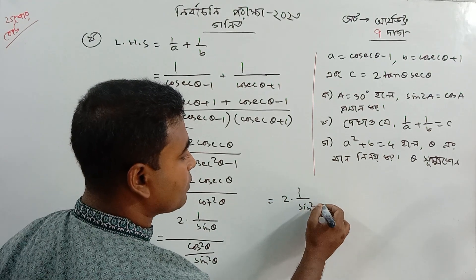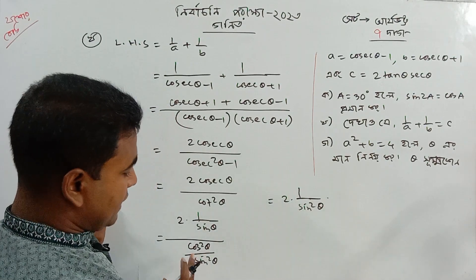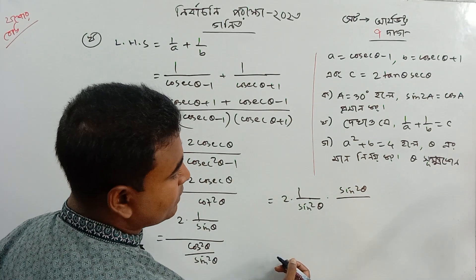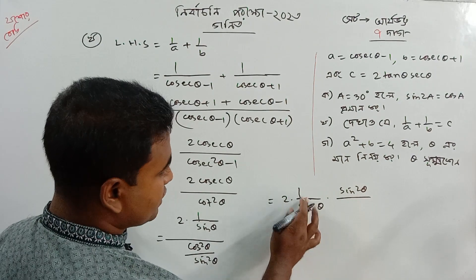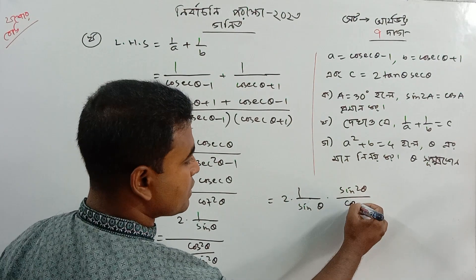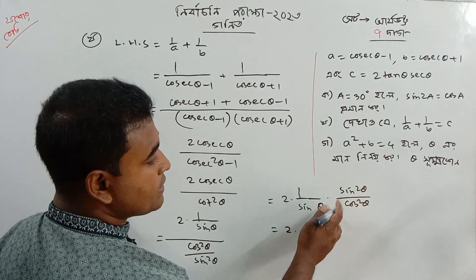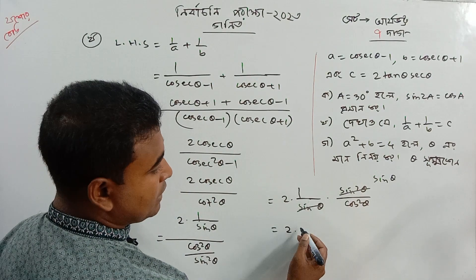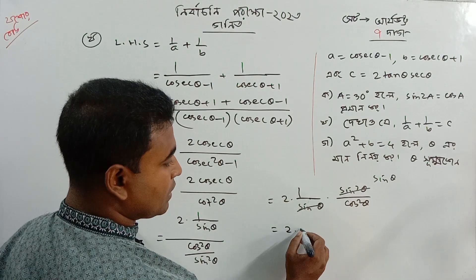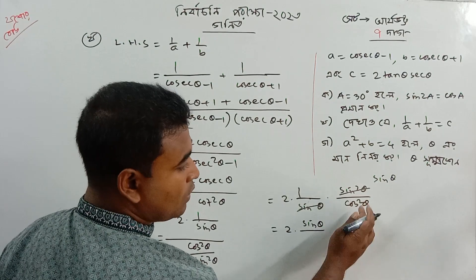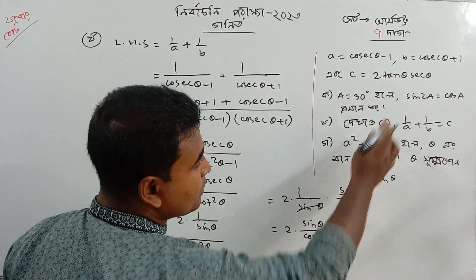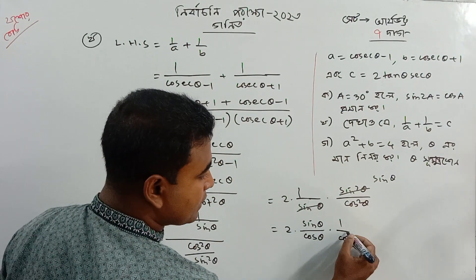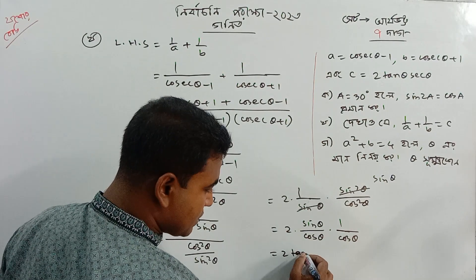So what is 2 into 1 by sin squared theta, it will go up to the run: cos squared theta, sin squared theta, sin squared theta, sin squared theta, sin theta, sin squared theta, cos squared theta — as a result.